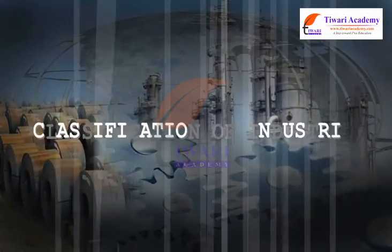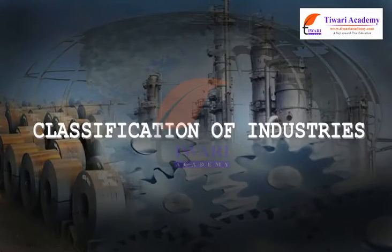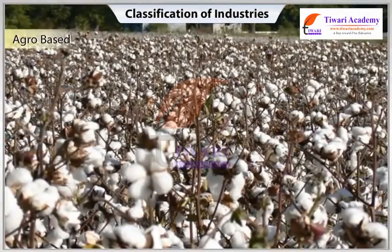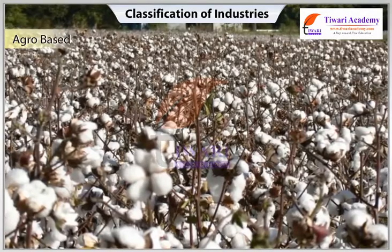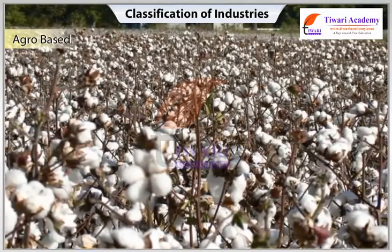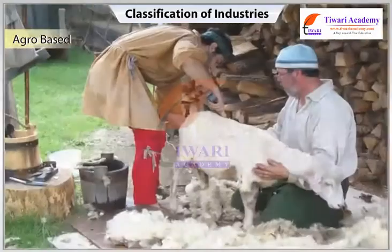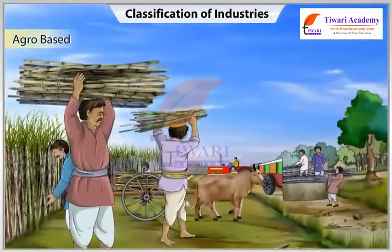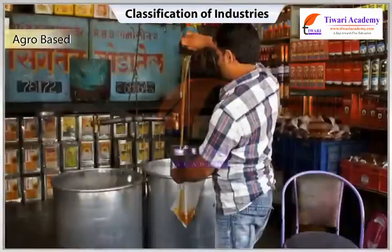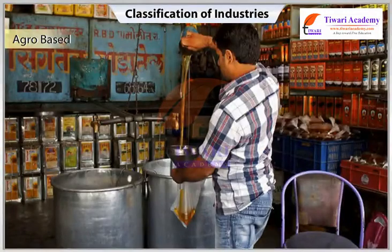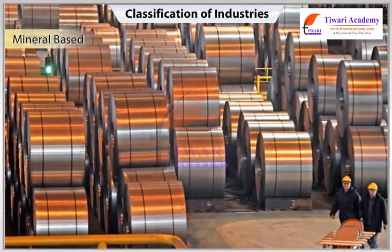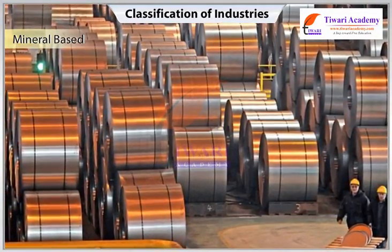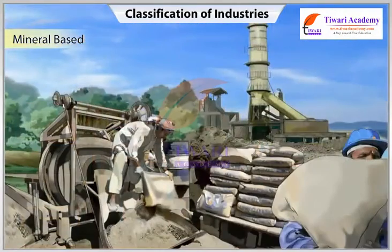Classification of industries on the basis of source of raw materials used: Agro-based industries are those which draw raw materials such as cotton, woolen, jute, silk, textile, rubber, sugar, tea, coffee, edible oil, etc. from agriculture. Mineral-based industries are those which get raw materials from minerals, like iron and steel, and cement industries.